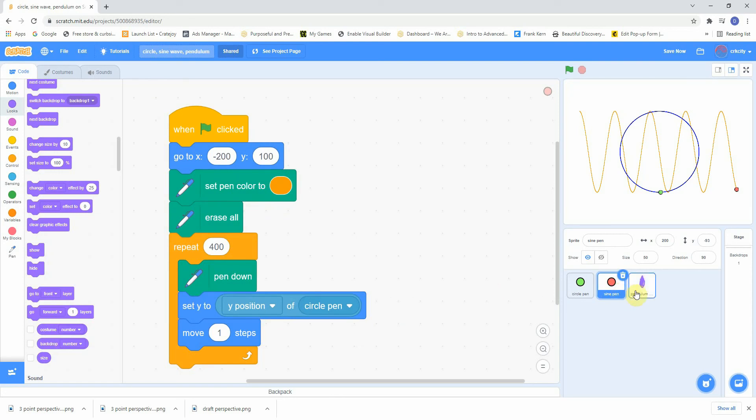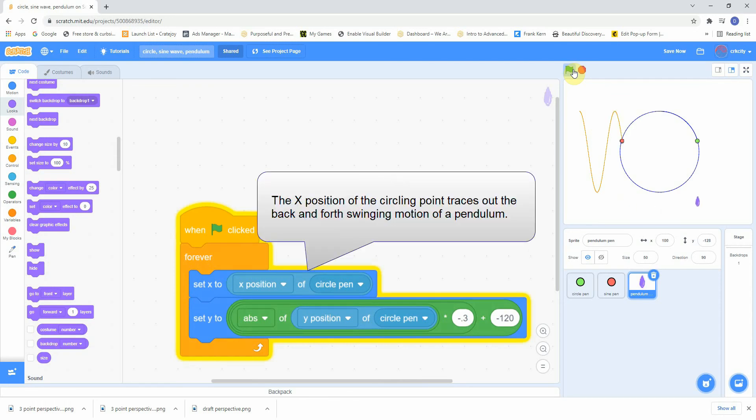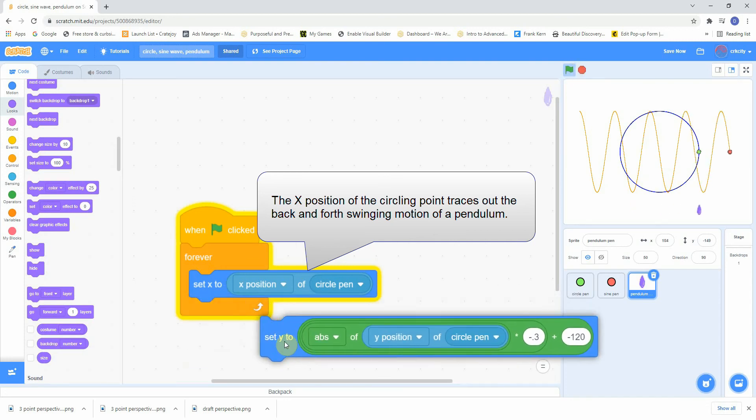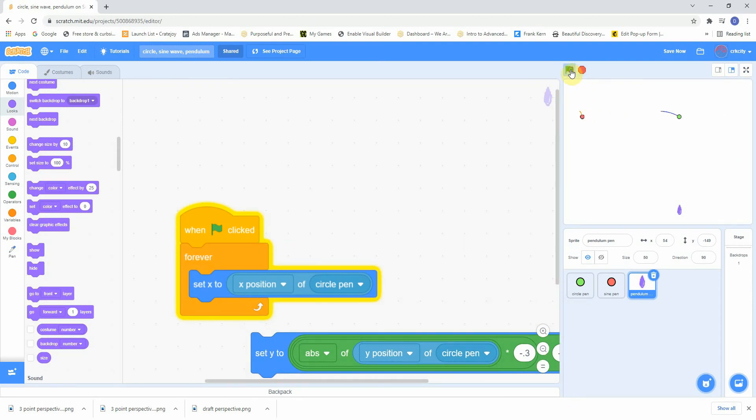Now the sine wave happens to be the motion of a pendulum. And if we just match the X position, which is the same idea, the left-right position of a circling point, the purple swinging pendulum below is just matching the X coordinate. I have an extra little command to make it curve a little, but basically it's just set X to X position of the circle pen.